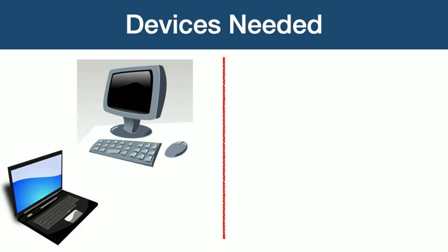First, let's look at what devices you need in order to participate. In order to see the questions and answers along with the hosts and participants, you need access to Zoom using a computer or a laptop. Once the host starts screen sharing the Kahoot, a larger screen makes it easier to see and read the questions and answers. Also, it is often easier to type in the Zoom chat using a standard keyboard.